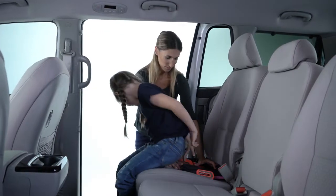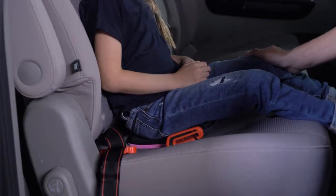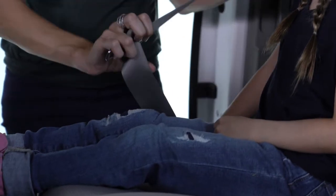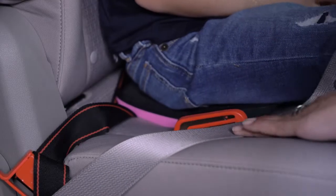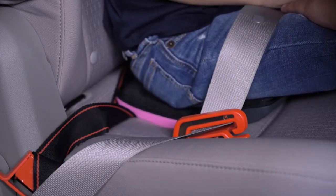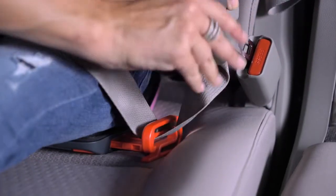Seat the child on the booster with the child's bottom and back in contact with the vehicle seat back cushion. Now secure the child in place with the vehicle lap and shoulder belt. First, slide the lap belt portion of the vehicle belt completely into the lap belt guides on both sides of the seat and buckle the vehicle seat belt.